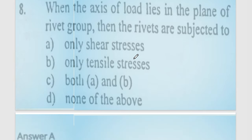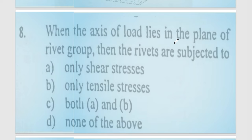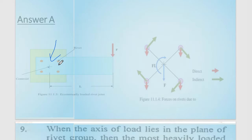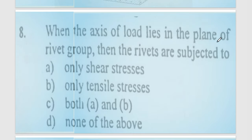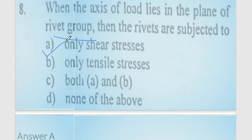Question number 8: when the axis of the load lies in the plane of the rivet group, the rivets are subjected to only shear stress. If the load is eccentric, there will be indirect stress as well. But when the load lies in the plane of the rivet group, it is only shear stress. Option number A is correct.